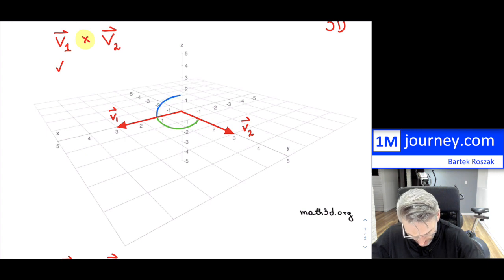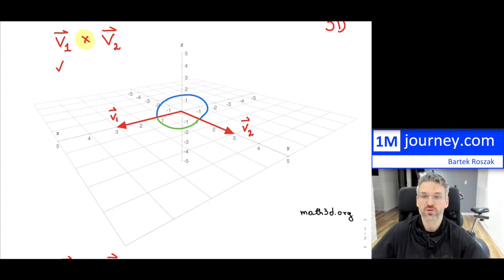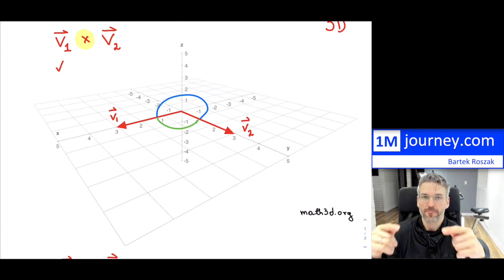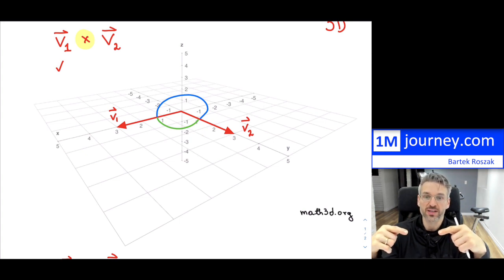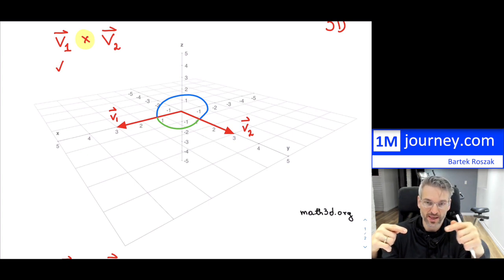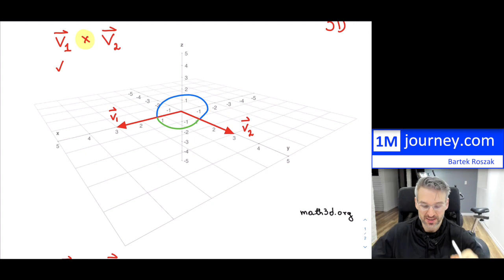These two vectors are 90 degrees apart. So that green angle is 90 degrees, and the blue would have been 270 degrees, because those together make up the full 360. Moving forward — as we also did with the dot product — you always take the smaller angle in between the two.